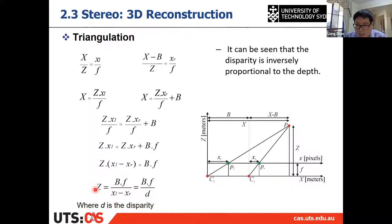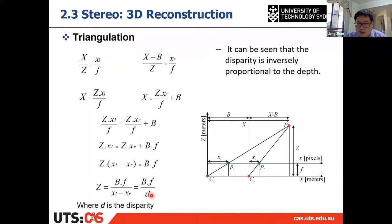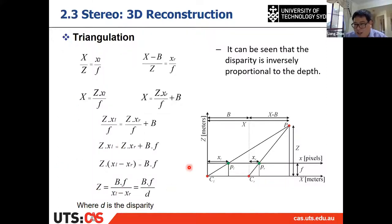Here we confirm: larger disparity will cause a smaller Z, which means a shorter depth. This is consistent with what we said earlier — larger disparity means shorter distance. This is the triangulation.